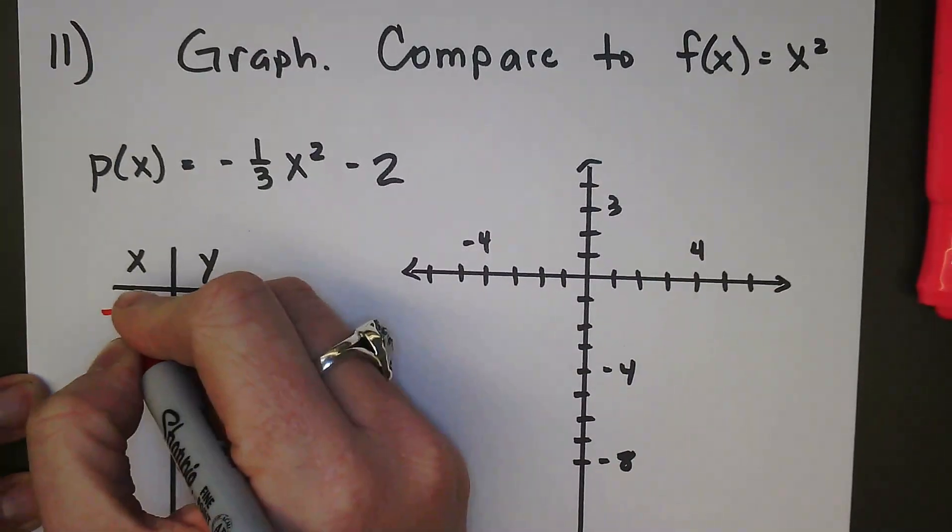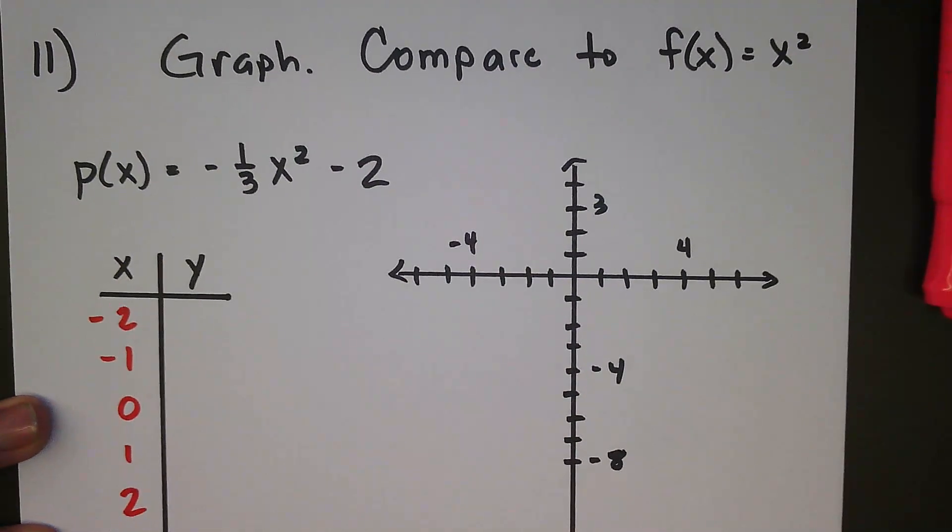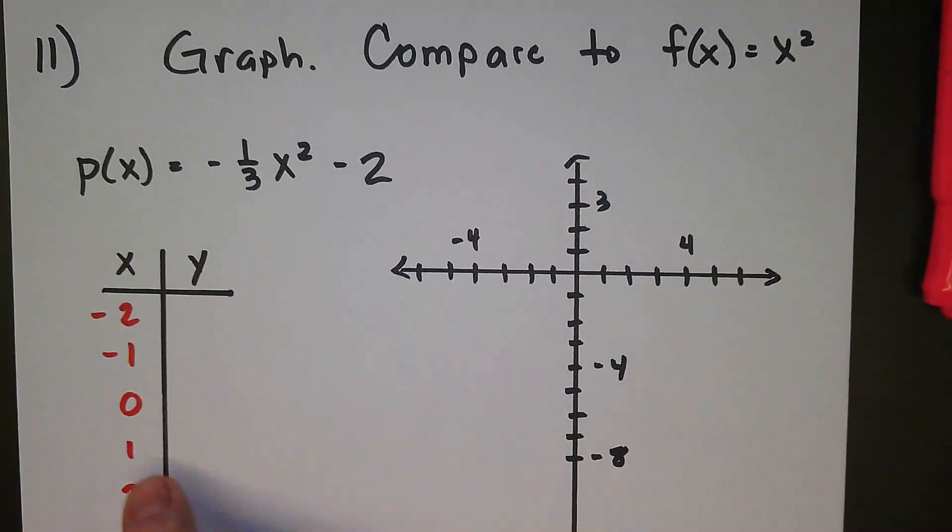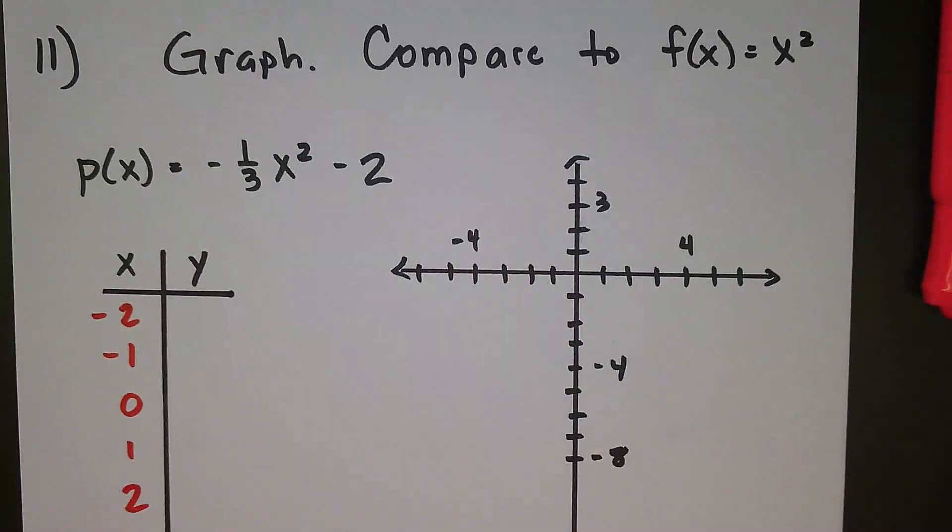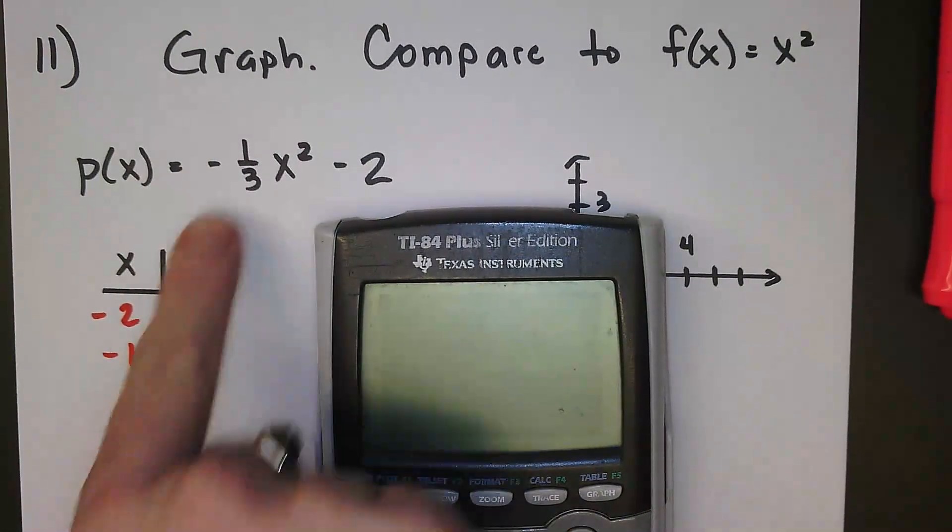So if I'm going to use a table to graph, negative two to two is going to work out real nice. We're going to use a calculator because I got to input these in here, and we're getting to the point where we really don't want to do this by hand. We want to be able to get through this quickly and efficiently.